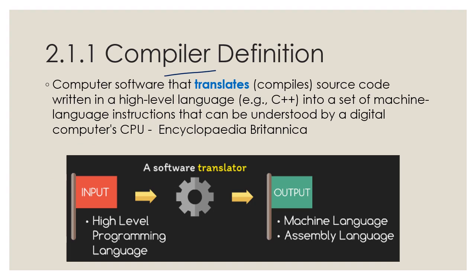Let's look at the definition of compiler. A compiler is a computer software that translates or compiles source code written in a high-level language such as C++ into a set of machine language instructions that can be understood by a digital computer's CPU. This translation comes from Encyclopedia Britannica. In its most basic definition, a compiler is a software translator — it translates high-level programming language into low-level programming language such as machine language or assembly language.